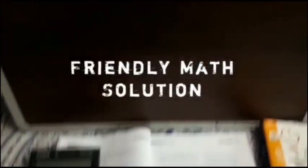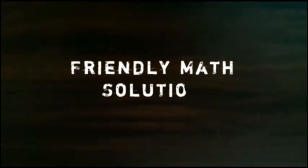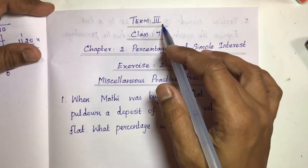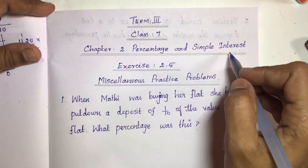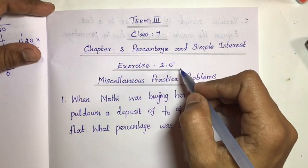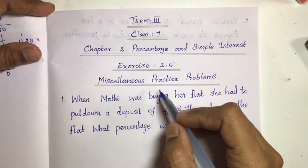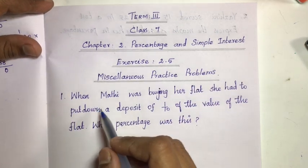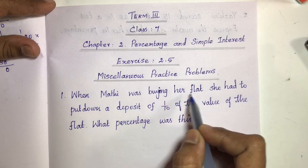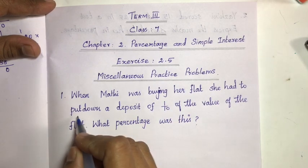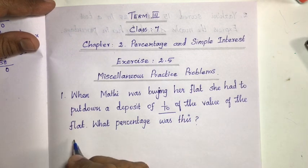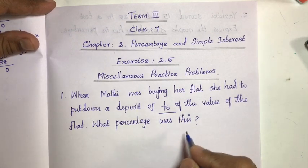Standard 7, Chapter 2: Percentage and Simple Interest, Exercise 2.5. First, practice problems. When Madhi was buying her flat, she had to put down a deposit of 1/10 of the value of the flat. What percentage was this?